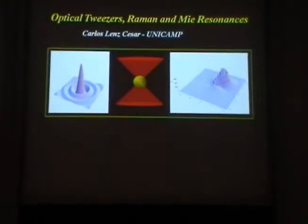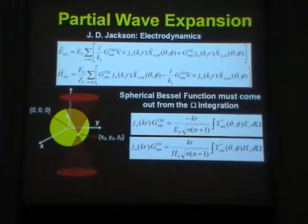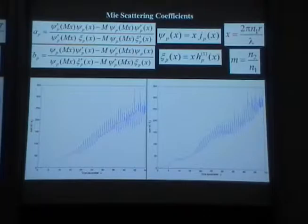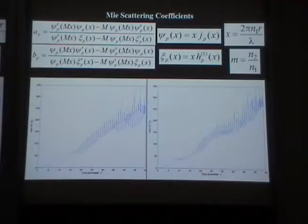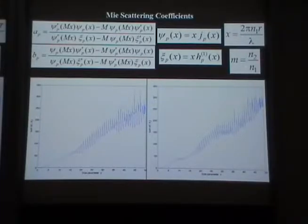Changing subject here, for the optical laser with spectroscopic Mie resonance — back to the first talk — we are talking about using the partial wave expansion, and the force will be given by the Mie coefficients. The force is given by this Mie coefficient here. The sum of the Mie coefficients a and b is plotted as a function of x, which is given by the size of the particle divided by lambda, and the refractive index of the particle, and the relative index of the external medium compared to the internal medium.